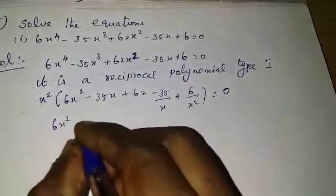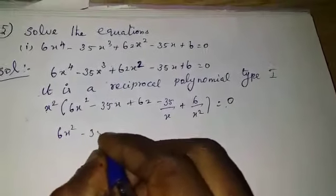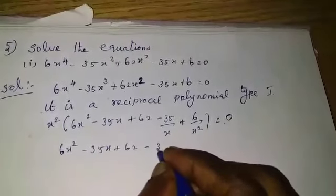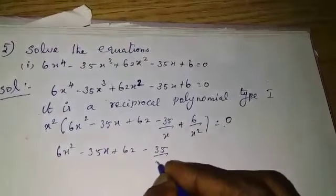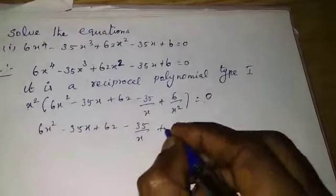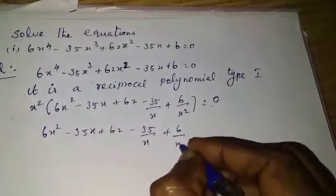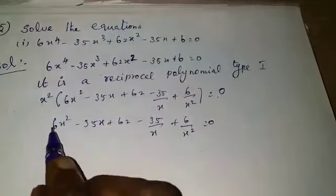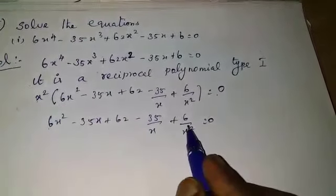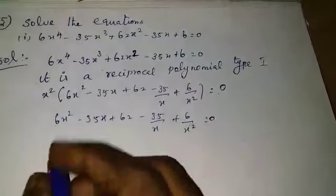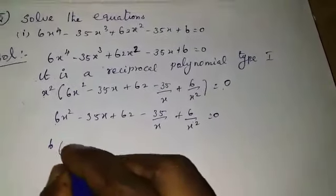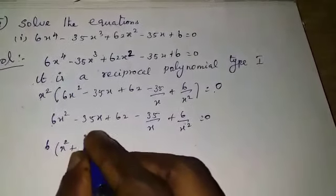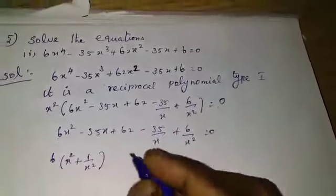We have 6x² minus 35x plus 62 minus 35 by x plus 6 by x² equal to 0. Compare the first term and last term. Take 6 as common: 6 times (x² plus 1 by x²).